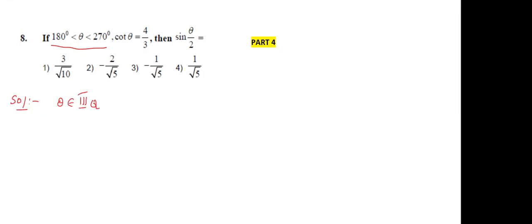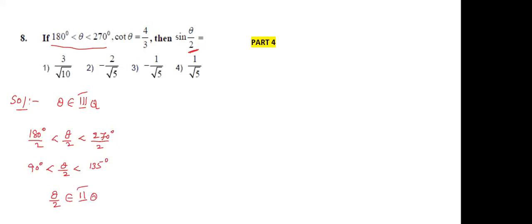Now divide the inequality by 2: 180/2 < θ/2 < 270/2, that is 90 degrees less than θ/2 less than 135 degrees. By observing this, we can say that θ/2 belongs to the second quadrant.